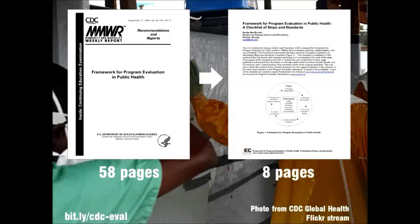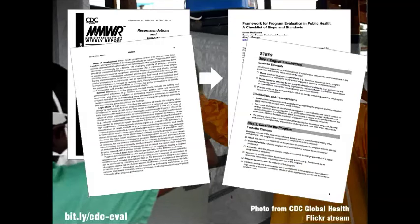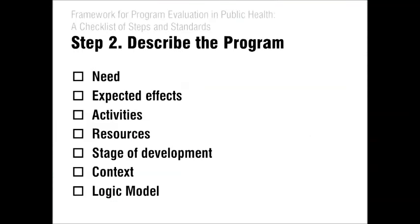She distilled this dense document into a very readable eight pages, highlighting the essential elements of each of the six steps and including some helpful clarifications and considerations for each step. As a side note, although this framework was developed specifically for evaluating public health programs, it's really quite applicable to almost any evaluation setting — it's a very adaptable approach. Here are the essential elements of step two of the framework, which is to describe the program. I find this checklist format to be so much easier to use as a quick reference than the full framework document.